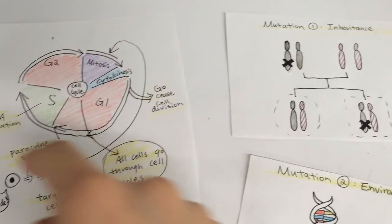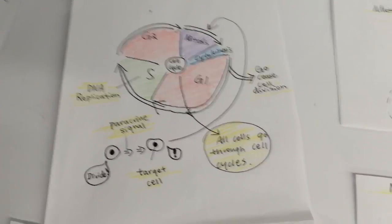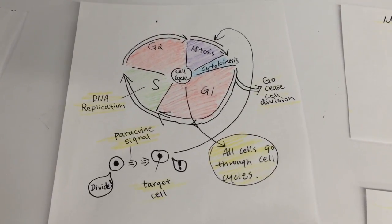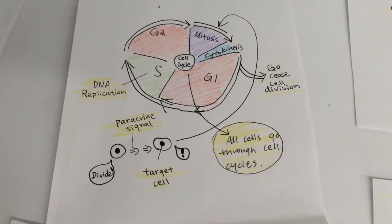So we know that when we get cancer, our cell behaves irregularly because it has mutations in genes. In other words, the coding of its behavior has gone wrong. But how do cancer cells get the mutation in genes in the first place?